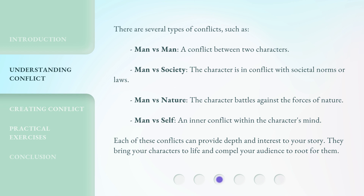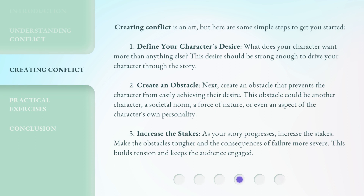They bring your characters to life and compel your audience to root for them. Creating conflict is an art, but here are some simple steps to get you started. First, define your character's desire — what does your character want more than anything else? This desire should be strong enough to drive your character through the story. Second, create an obstacle that prevents the character from easily achieving their desire. This obstacle could be another character, a societal norm, a force of nature, or even an aspect of the character's own personality. Third, increase the stakes. As your story progresses, make the obstacles tougher and the consequences of failure more severe. This builds tension and keeps the audience engaged.